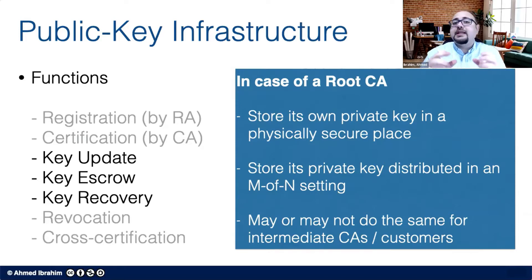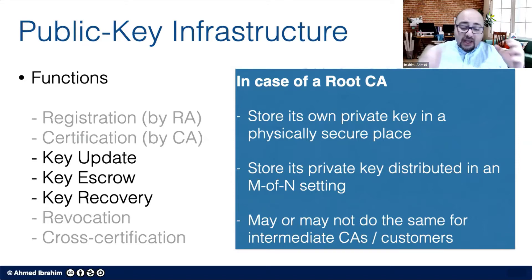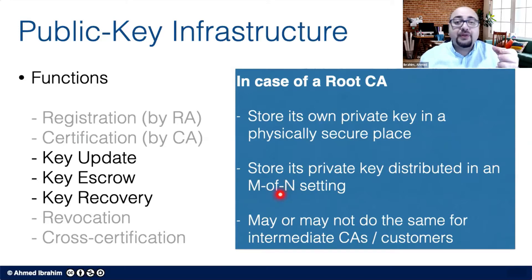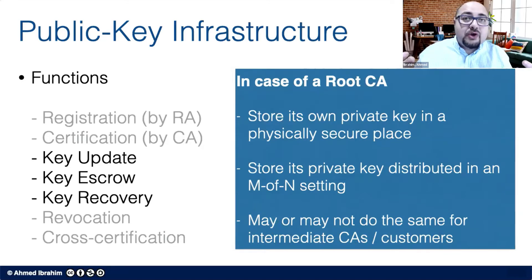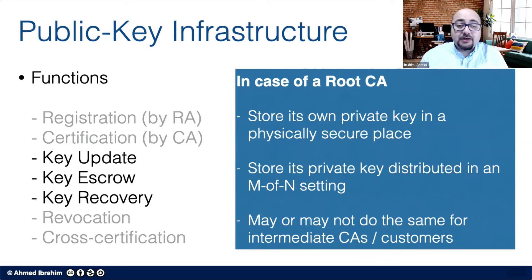Another way to store that private key is in an M-of-N setting. This is a cryptographic setting where the key is the secret and is cut into N pieces. Through that cryptographic setting, the whole key cannot be put back together or retrieved unless M of those N pieces agree that the key needs to be restored. For example, if you cut it into 12 pieces and require at least 8 people to agree it needs to be retrieved, you have confidence there will be no coercion where a small group could restore the key for malicious purposes. This is another way to store the private key electronically using an M-of-N setting.